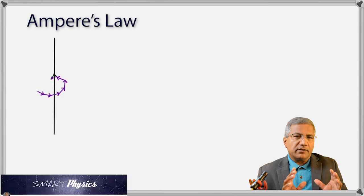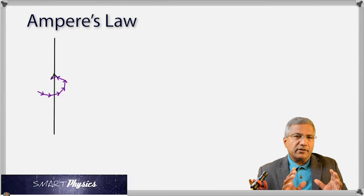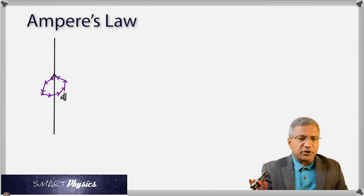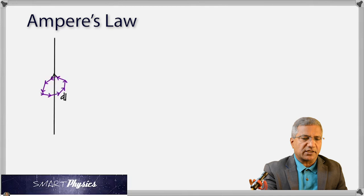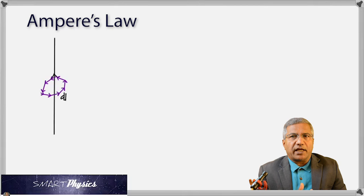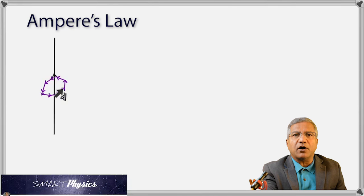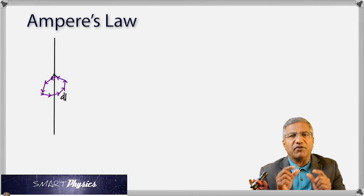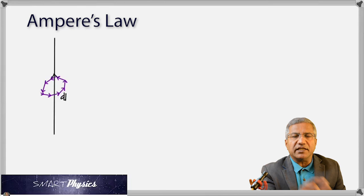Ampere's law is used to find the magnetic field. In this law, as you can see in this diagram, we consider a straight conductor carrying current upwards. Next, we imagine a closed path around the conductor — it can be of any shape, it need not be circular. This path is imagined to be divided into small sections, and we are considering one such section of length DL.